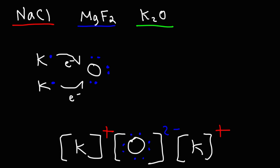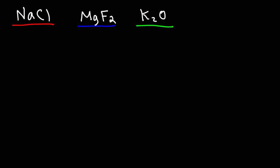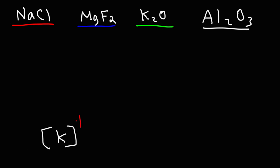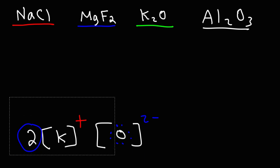So this is how we draw the Lewis structure for this particular ionic compound. For K₂O, you can also write it this way: 2K⁺ and then O²⁻. The coefficient 2 indicates that we have two potassium ions. That's another way in which you could write the Lewis structure for potassium oxide.